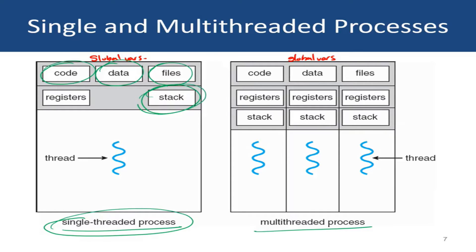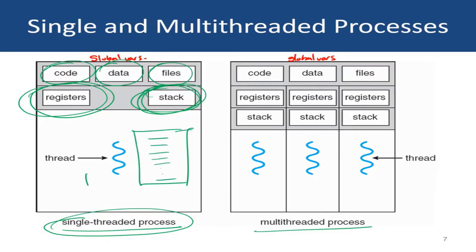So depending on the program logic, the state of the stack would be manipulated based on the order in which the functions are called and returned. And depending on the computations that the process is performing, there will be certain values and data items stored in the CPU registers, which determines the state of the register file for this process. The single threaded process requires only one copy of the register file and the stack, because it has a single path of execution through the program code — it is doing only one thing at a time.